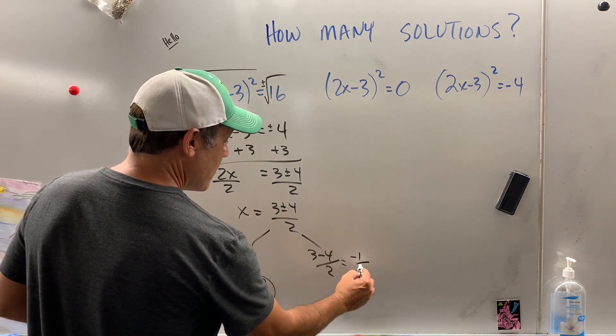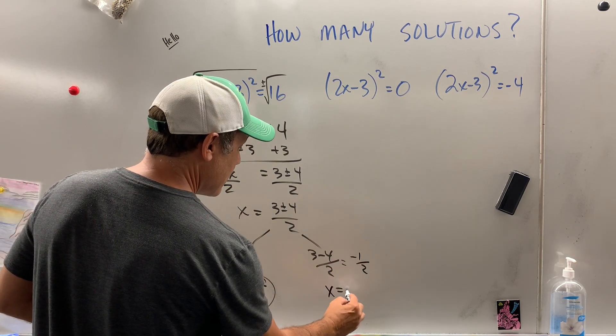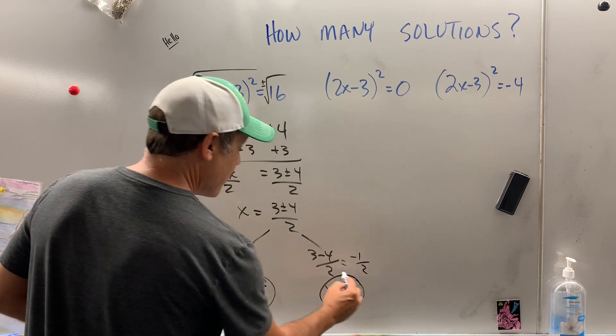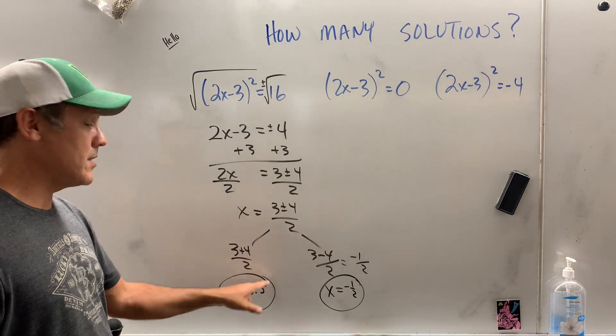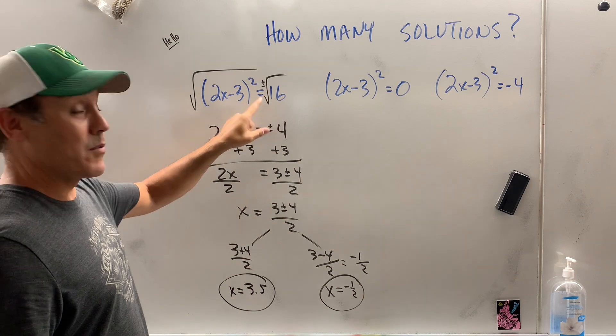3 minus 4 is negative 1 over 2. So x equals negative 1 half is another answer. So how many solutions? 2. Okay, we're going to come back to that.